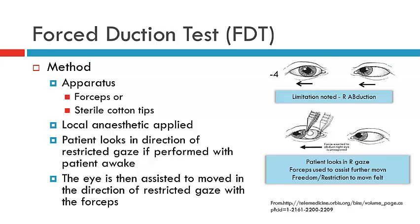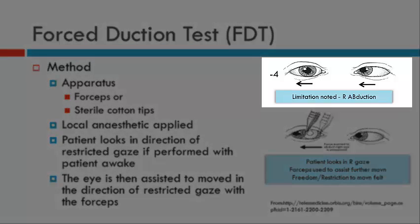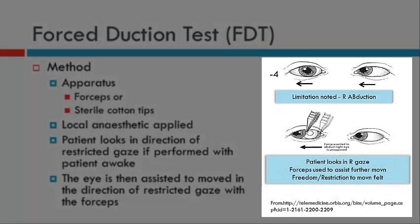The method for the forced duction test requires that you use either forceps or sterile cotton tips. In the first instance, we will have established what limitation we have observed. In this particular example to the right, we have a patient who has a limitation of right abduction — the lateral rectus is underacting or appears to be underacting. We will apply a local anaesthetic and ask the patient to look in the direction of restricted gaze if the patient is awake during testing. In this instance, the patient will be asked to look into right gaze.